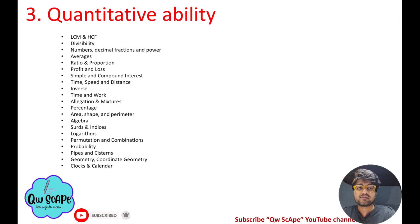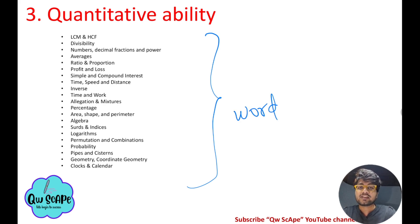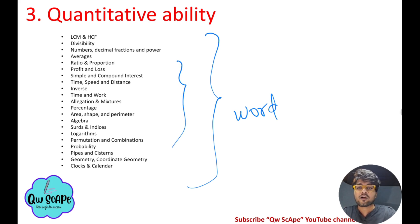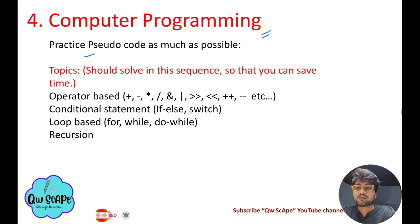For quantitative ability, there are several important topics but I have included questions for only the most important ones, since we have less time and a lot to cover. I've covered 10 questions that address the most critical topics, so you will be familiar with the question types when they appear in the online assessment.